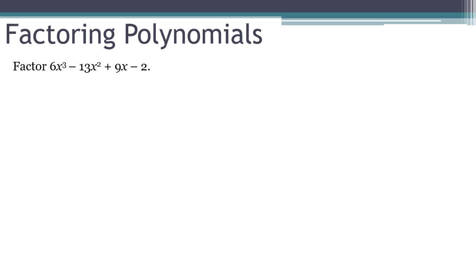So if we do that, you'll see we've got one, two, three sign changes here. That tells me I have to have either three positive roots or one positive root. So what else does that tell me? What do I know about the negative and the complex ones?